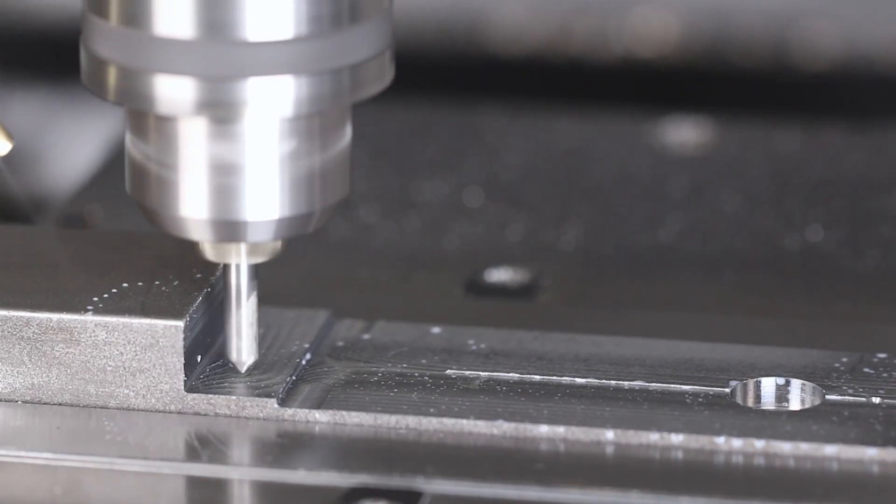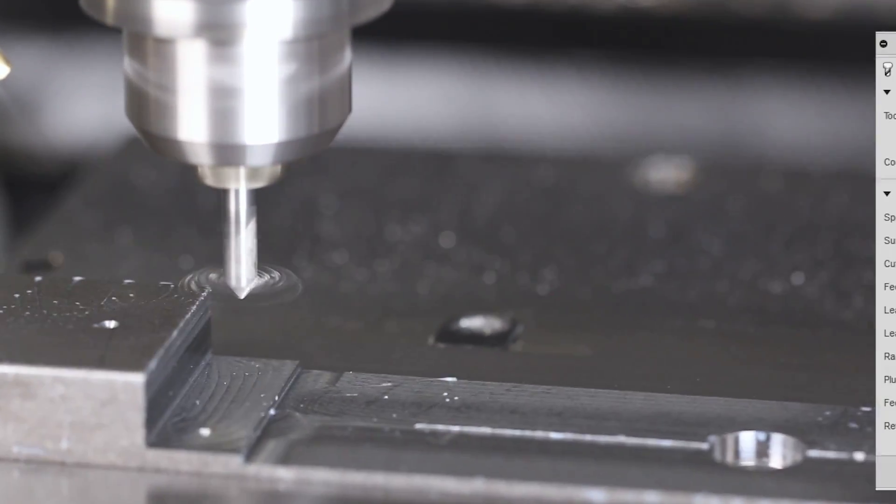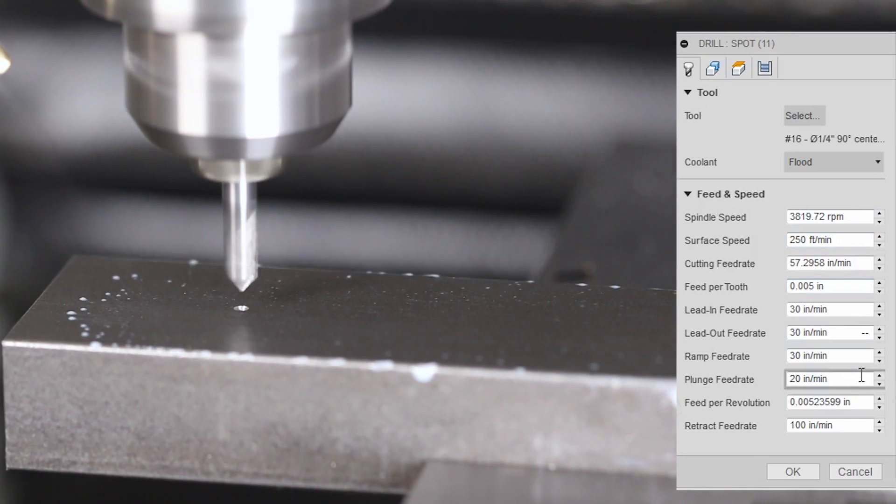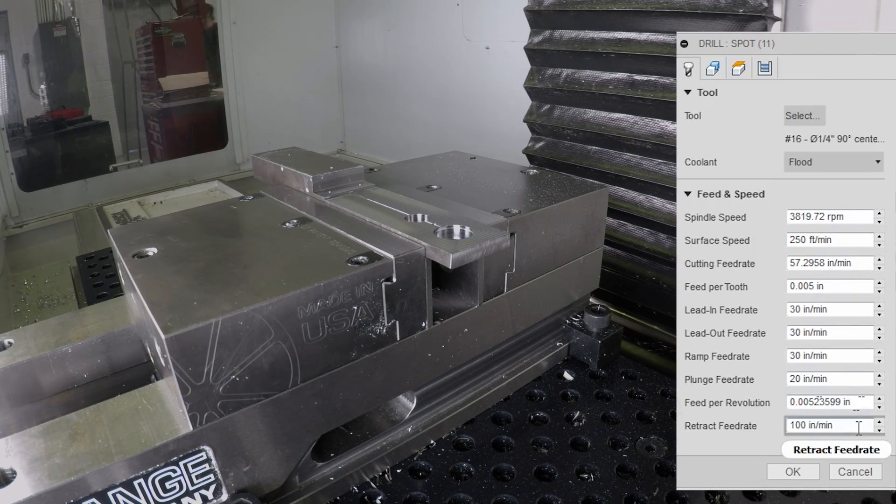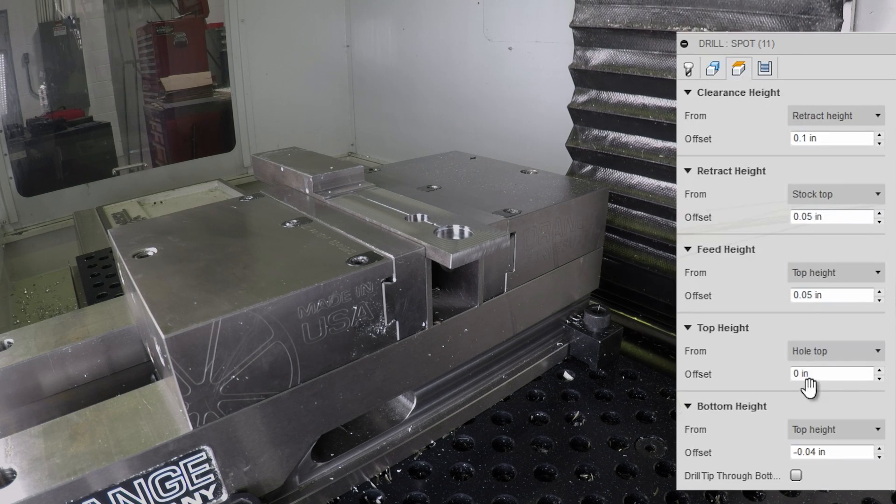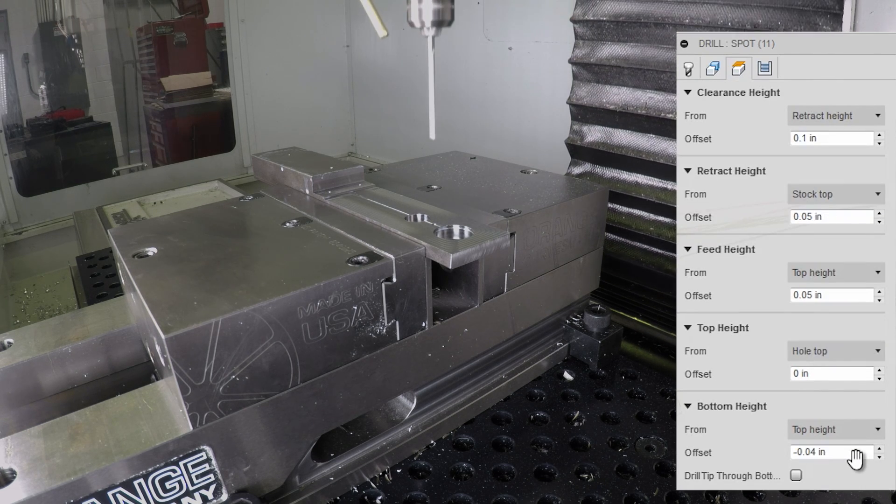I used to spot like a wimp. Don't. 250 surface feet a minute. Plunging at 5 thou per rev, which is 20 inches a minute. Retract feed rate, bump that up. Saves a little bit of time. Going 40 thou below the top of the hole.